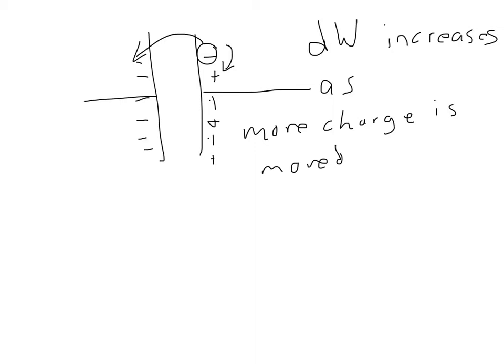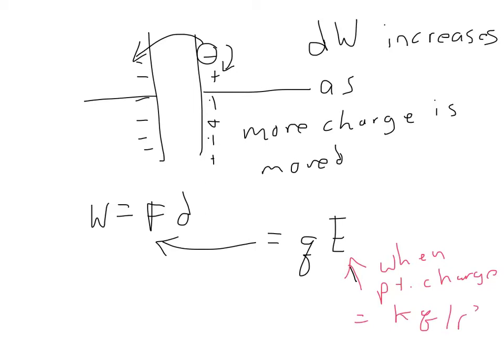So let's think about the definition for work. Work is equal to force times distance. And force for these charges is equal to q, the size of the charge, times the electric field that that charge happens to be sitting in. And when that electric field is caused by a point charge, remember the electric field is given by k times q over r squared, for point charge.